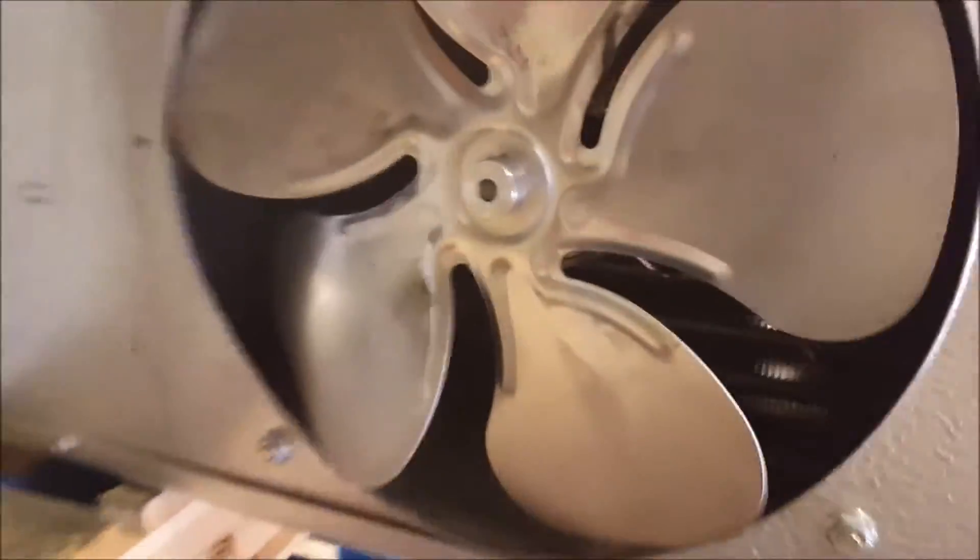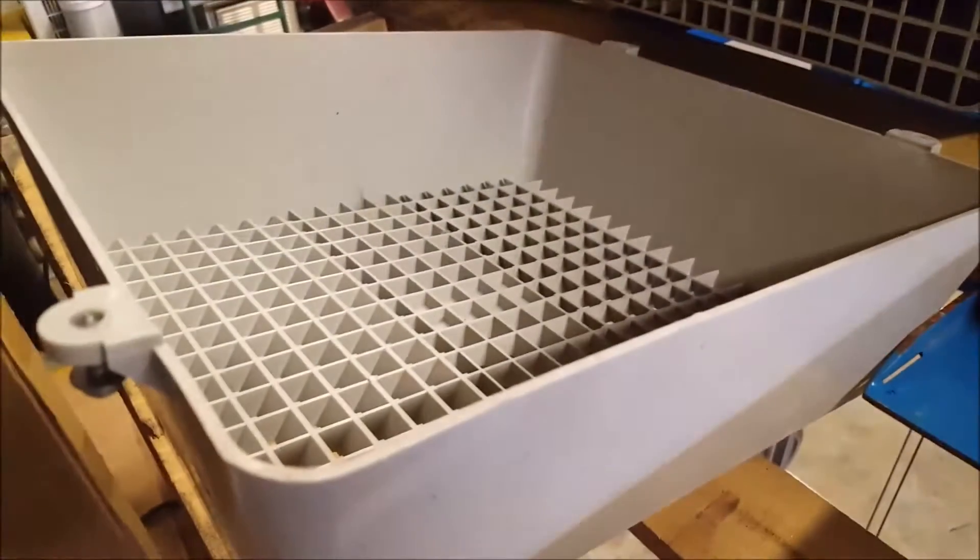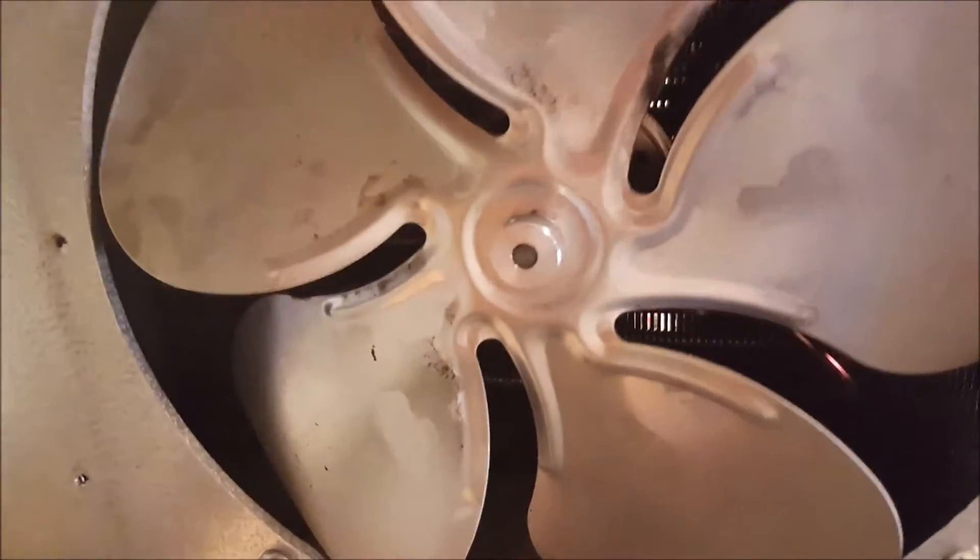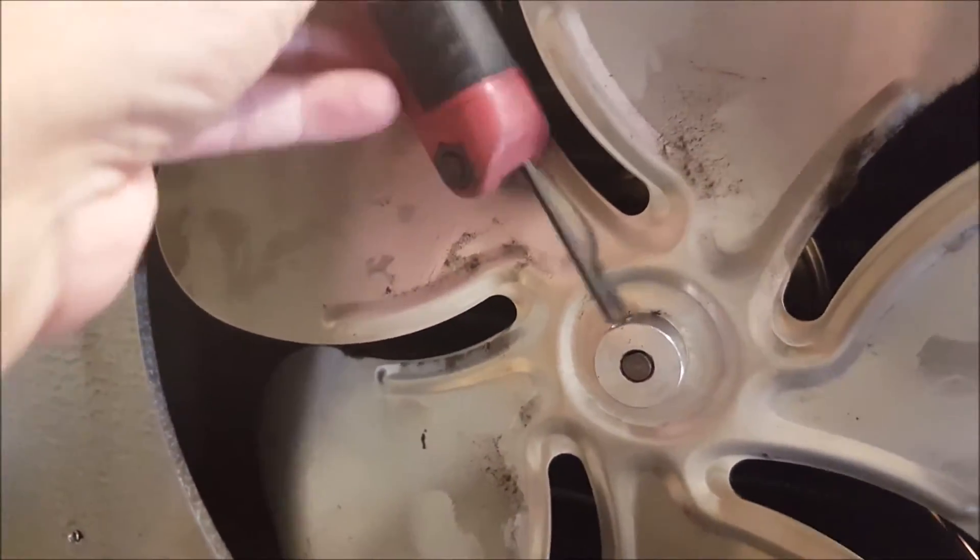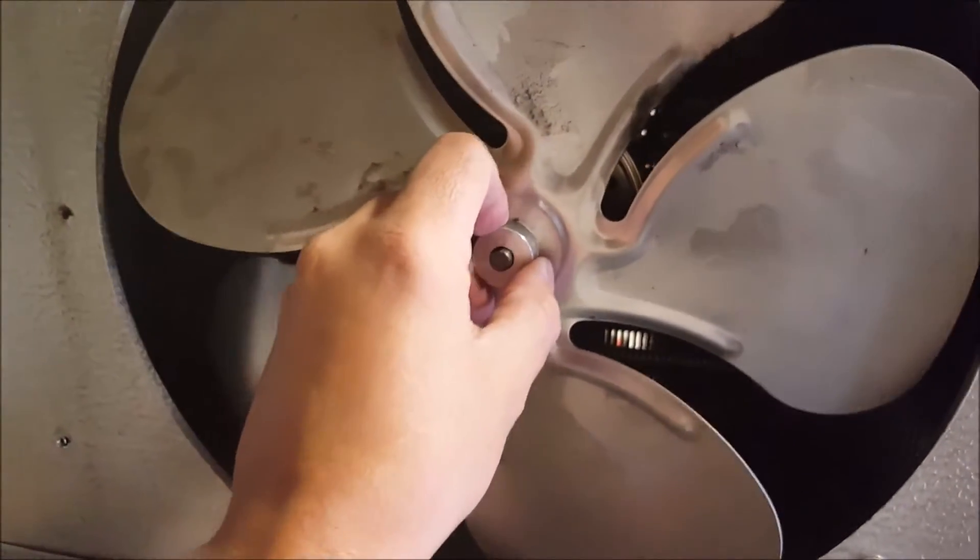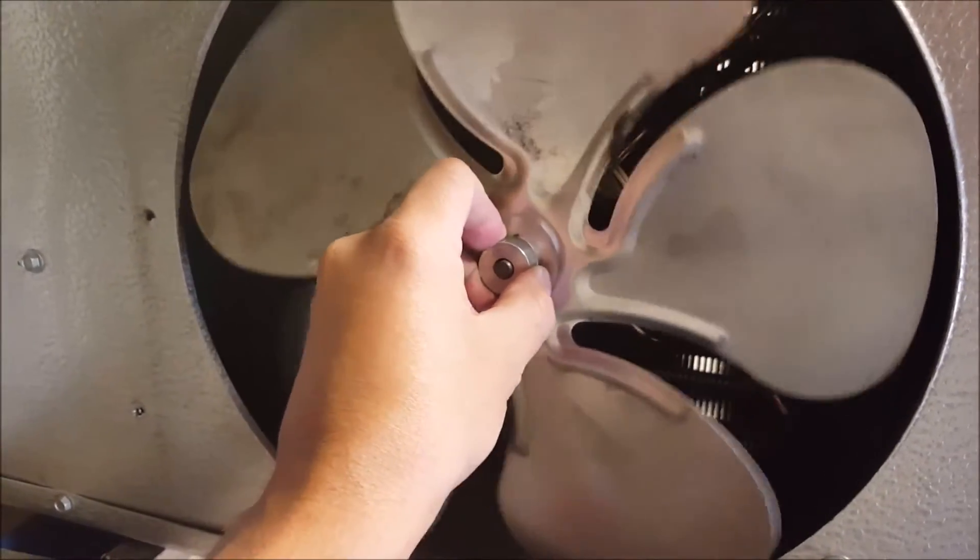I took the grill off. Here's your grill. Here's the one I took off. Here's your fan motor. So you take your Allen wrench, unscrew it there, loosen it up, and then pull your fan blade out.